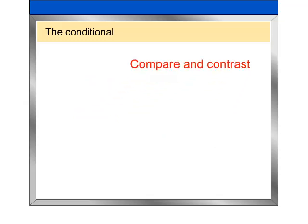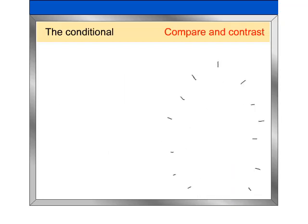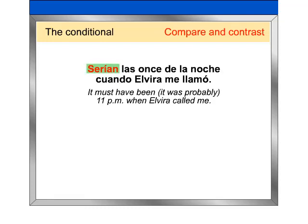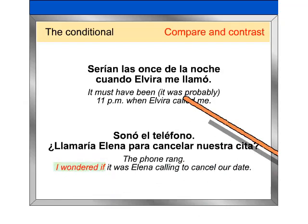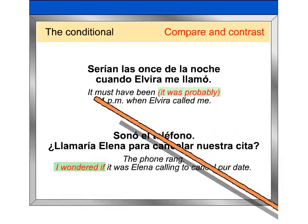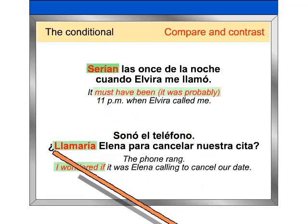Compare and contrast. Spanish also has the conditional of probability, which expresses conjecture or probability about a past condition, event, or action. Compare these Spanish and English sentences: ¿Serían las once de la noche cuando Elvira me llamó? Sonó el teléfono. ¿Llamaría a Elena para cancelar nuestra cita? Note that English conveys conjecture or probability with phrases such as 'I wondered if...', 'Probably...', and 'Must have been...'. In contrast, Spanish gets these same ideas across with conditional forms.